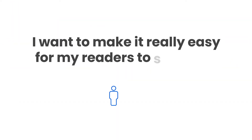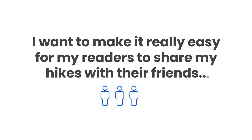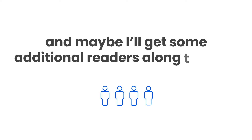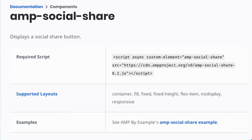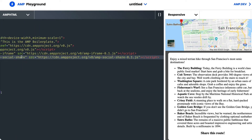I want to make it really easy for my readers to share my hikes with their friends, and maybe I'll get some additional readers along the way. Luckily, AMP makes this very easy with the AMP social share component. Like most AMP components, I need to import the script, so I'll do that first.